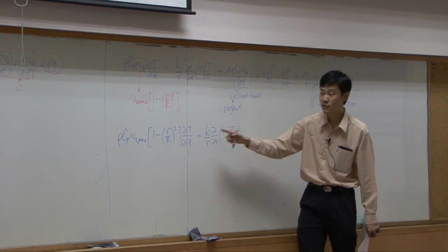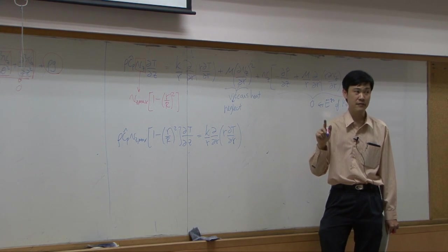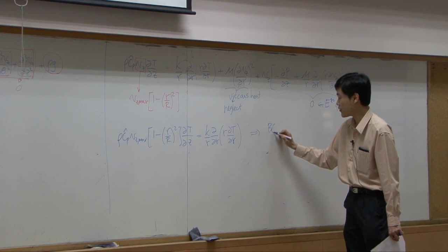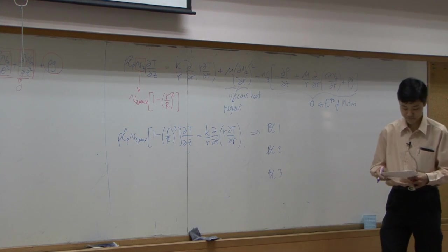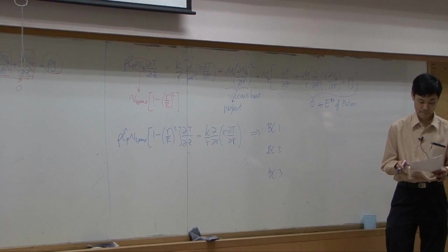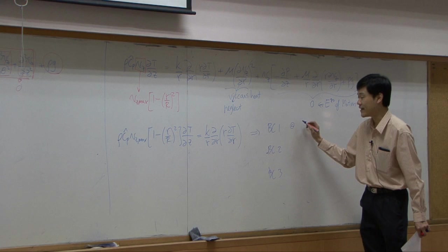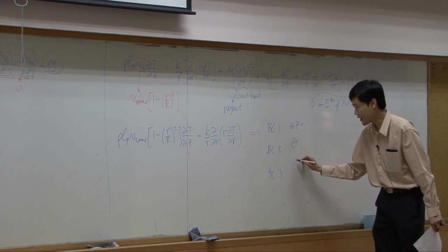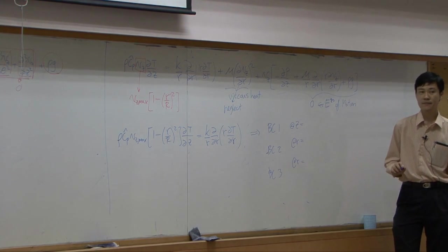So in total, you need three boundary conditions. One with respect to z, two with respect to r. What are they? You need to know that one supposed to be indicated at z equal to something. The other two indicate at r equal to something.